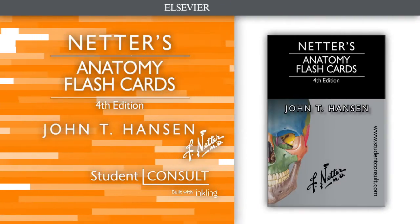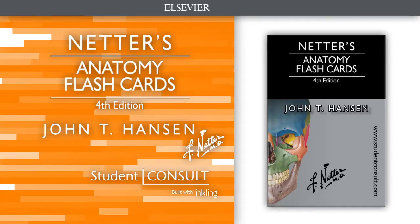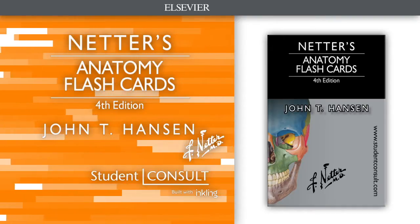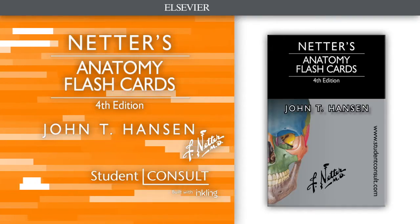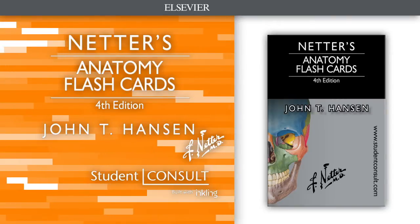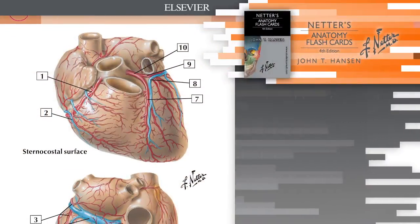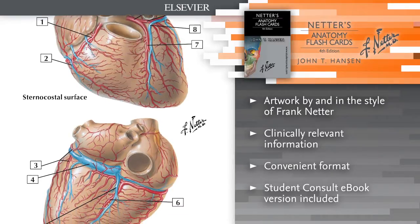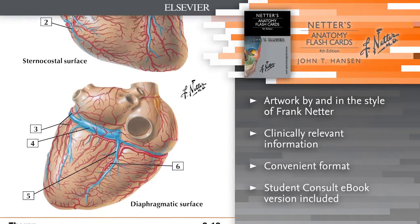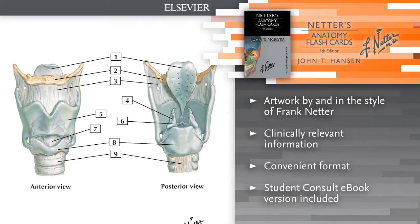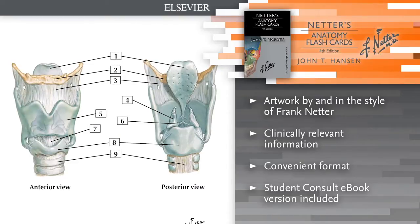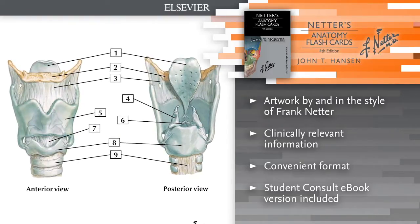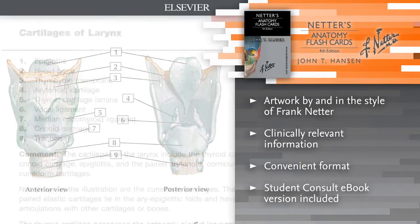Introducing Netter's Anatomy Flashcards, the most convenient and portable way to review anatomy on the fly. This fourth edition contains full-color illustrations from Netter's Atlas of Human Anatomy 6th edition, paired with concise text identifying those structures and reviewing relevant anatomical information and clinical correlations.